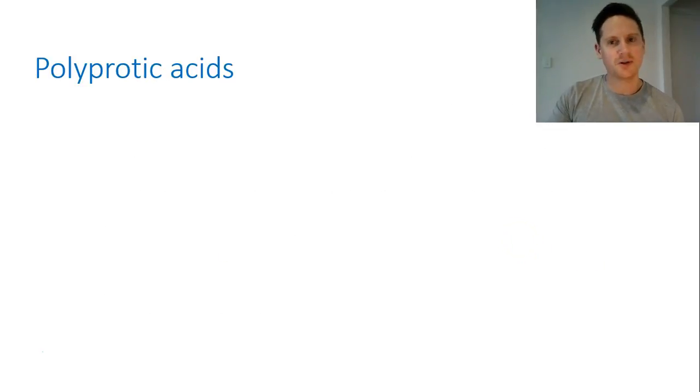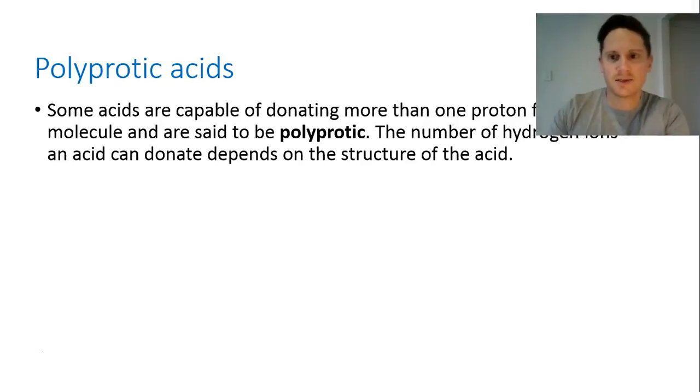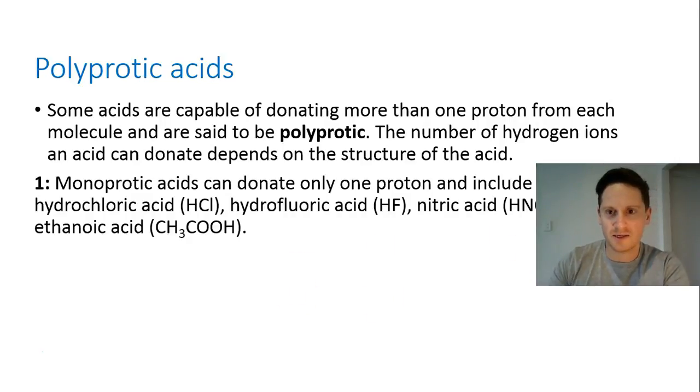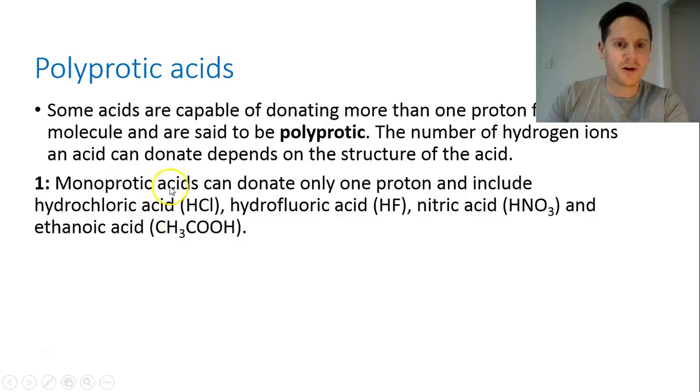The next section is on polyprotic acids. So some acids are actually capable of donating more than one proton, and they're said to be polyprotic. The number of hydrogen ions that acid can donate depends on the structure of the acid. So there's a lot of writing on this slide. Sorry about that. Monoprotic acids can donate only one proton, and these include HCl, because it only has one hydrogen, hydrofluoric acid, which is HF, nitric acid, again, only one hydrogen, and ethanoic acid. Now this one's a bit unique. It's got more than one hydrogen, but it only donates one. And we'll explain that in a minute.